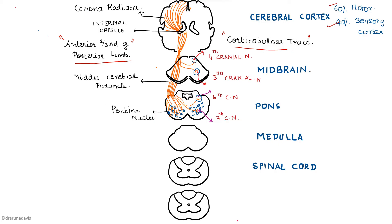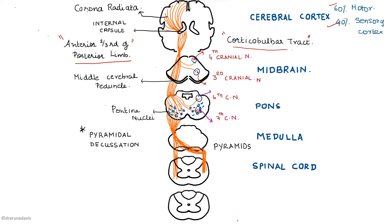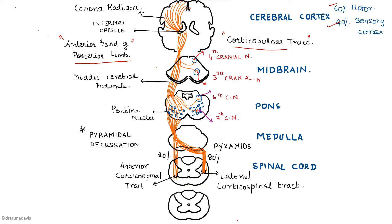After the level of the pons, the fibers come together in a compact manner and reach the medulla, where they cross. About 80% of the fibers cross to the opposite side at the level of the pyramids — this crossing is known as pyramidal decussation. That is why the corticospinal tract is also called the pyramidal tract. The 80% of fibers that cross form the lateral corticospinal tract, and the 20% that do not cross form the anterior corticospinal tract.